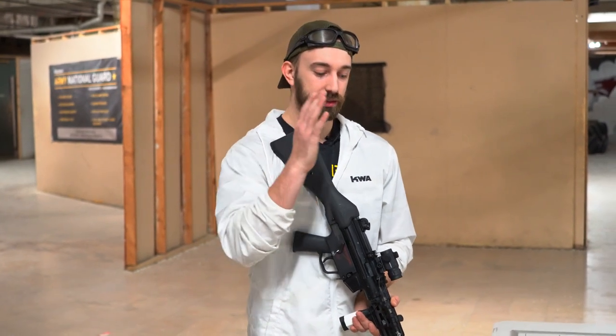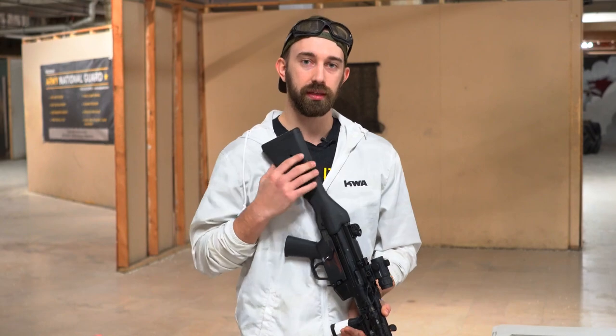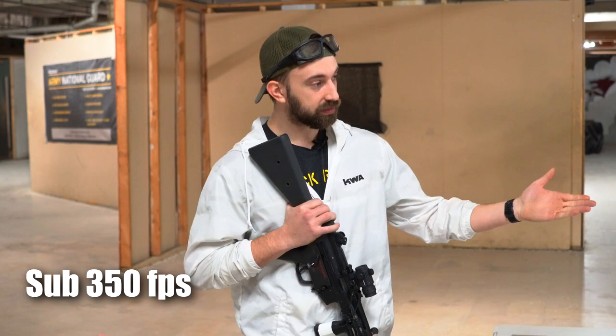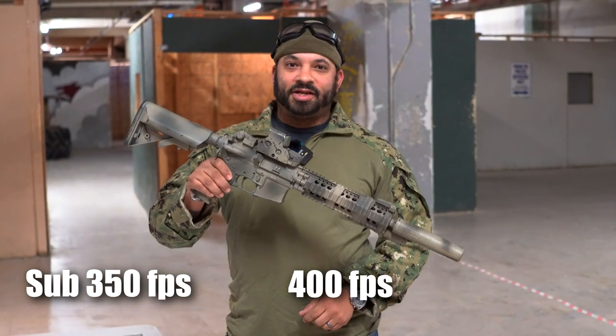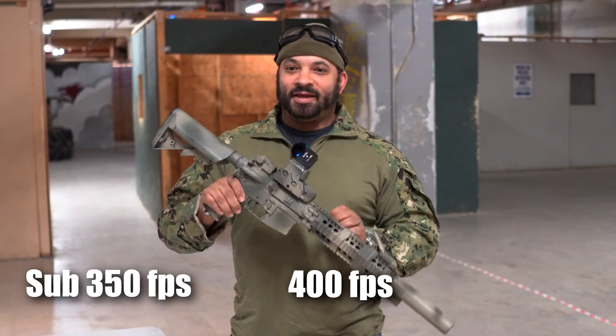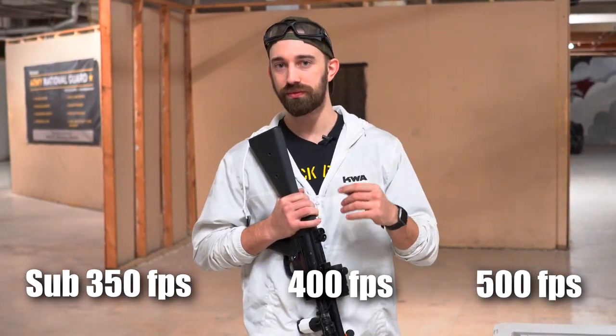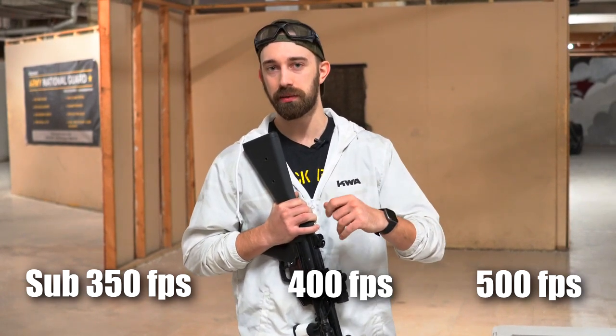So we're going to be shooting the gelatin and the eyeballs with an AEG MP5, shooting sub 350 FPS. Tipman HPA, currently chrono at 390 with a 0.20 BB. And then we also have a VSR custom that's going to be shooting close to 500 feet per second, and that's going to be shooting 0.45 gram BBs. Really carry that kinetic energy. So let's get into it.